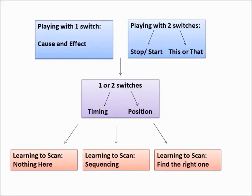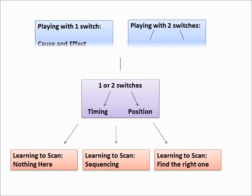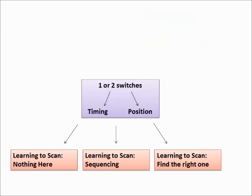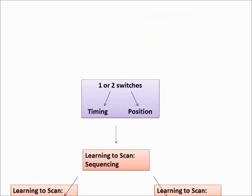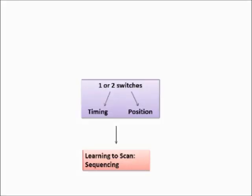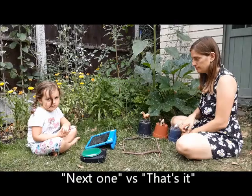The next stage is sequencing. Just like the previous stage, the child will scan between choices. At first there are no wrong answers. But as the child continues to make selections, spaces will clear up to form a 'nothing here' spot.